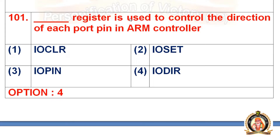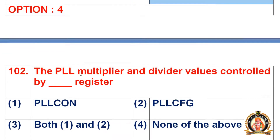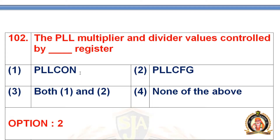Question 101: A dash resistor is used to control the direction of each port pin in ARM controller. The options are IOCLR, IOSET, IOPIN, and IODIR. The right option for question 101 is option number 4, that is IODIR.